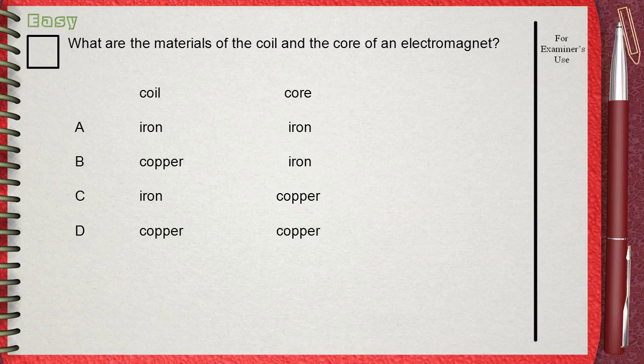And we have two columns, one for the material of the coil and the other for the material of the core.